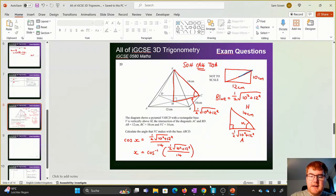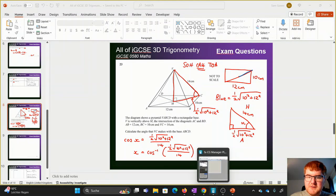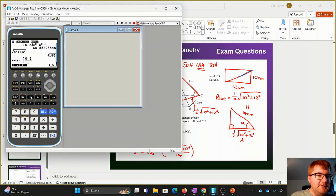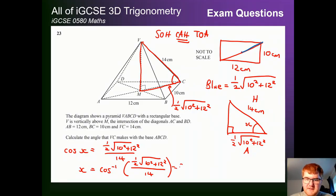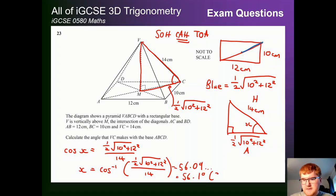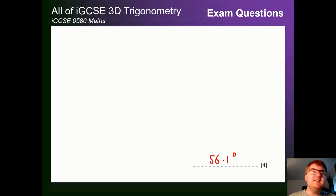We're looking for an angle, so we take inverse cosine of that fraction. Popping it into the calculator: shift cosine, open bracket, fraction with 0.5 times the square root of 10 squared plus 12 squared at the top, divided by 14, close bracket. We get 56.09, which rounds to 56.1 degrees to one decimal place. These four mark questions give you quite a lot of method marks even if something goes slightly wrong.